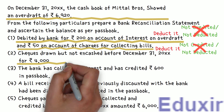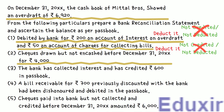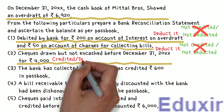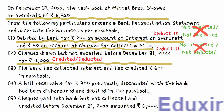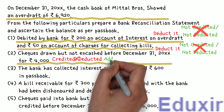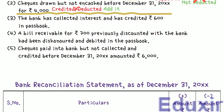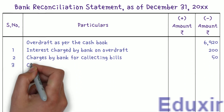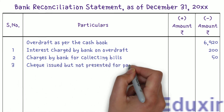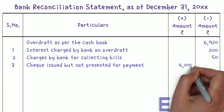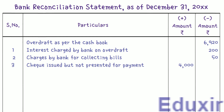Checks are drawn for 4,000 rupees but not yet encashed. When checks are issued to suppliers or creditors, they are immediately recorded in the business cashbook, but as these checks are not yet encashed, there won't be a corresponding debit entry in the bank passbook. So we need to add this amount to the cashbook balance to get the passbook balance. We write 'check issued but not presented for payment' and enter 4,000 rupees in the plus amount column.